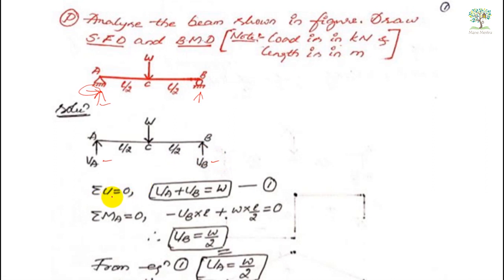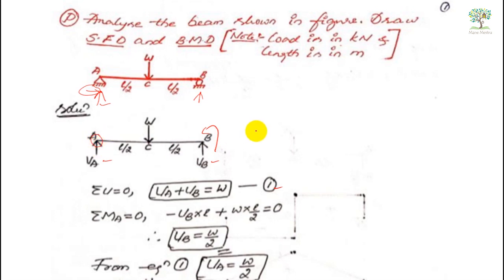Using the equilibrium equation, the sum of vertical forces equals zero, therefore VA plus VB equals W — let us call this equation one. Now taking the moment about A equals zero: VB acts at a perpendicular distance of L, and since VB will try to rotate in the anti-clockwise direction about point A, we write minus VB into L.